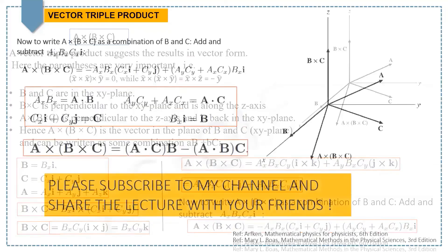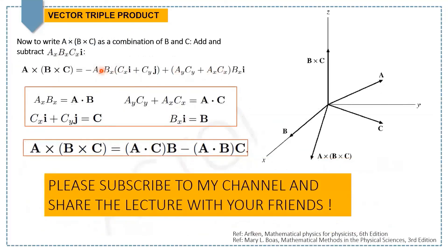Now if you look at this expression, the term Ax Bx is part of the dot product A·B, and this whole expression is the C vector. This whole expression is A·C, and Bx i is a component of B.